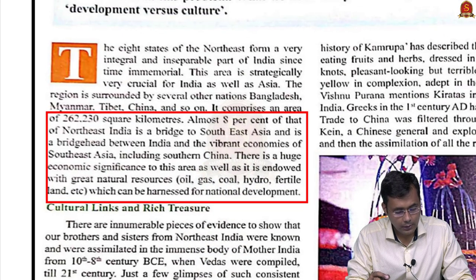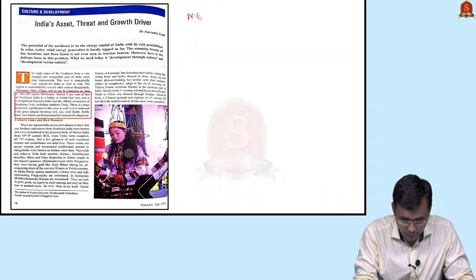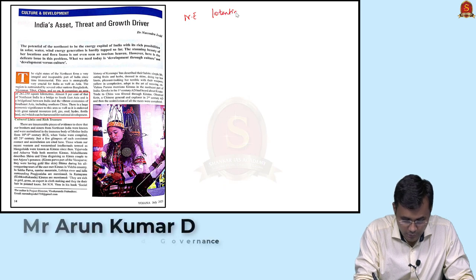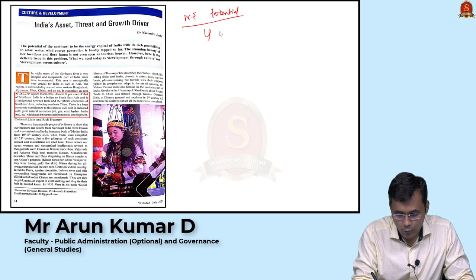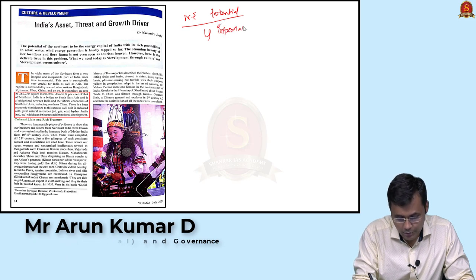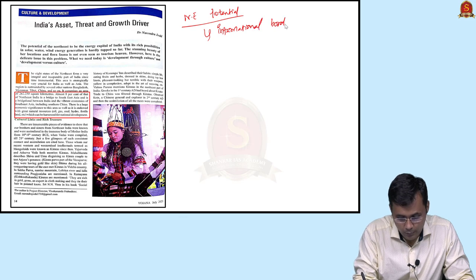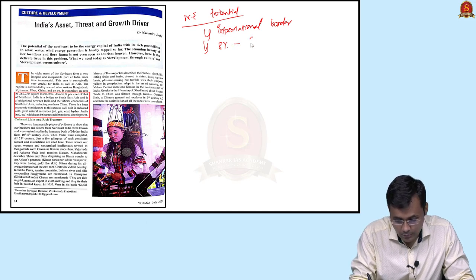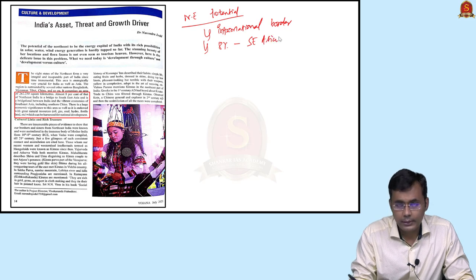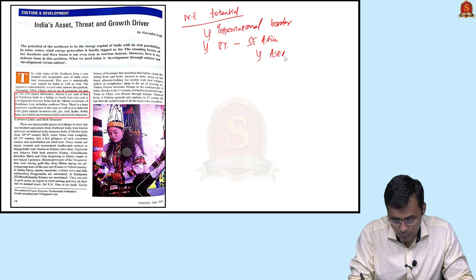Almost 98% of Northeastern states' borders are shared with foreign countries, with only about 2% connecting to the Indian mainland. The region borders Southeast Asia, including the vibrant economies of Southeast Asian nations and southern China. This gives the region enormous economic significance as a bridge between India and Southeast Asia. The region is also endowed with rich natural resources, adding to its development potential. Traditionally, India has focused westward for trade, but the Northeastern states offer access to new eastern markets through the Act East Policy.